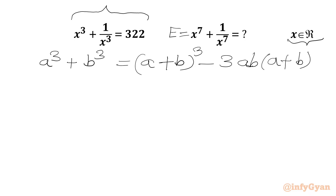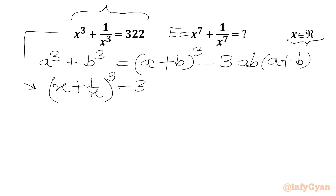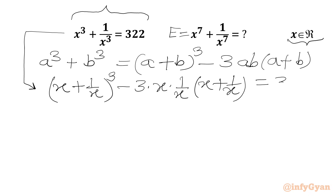Let's apply this formula to our LHS. We can write (x + 1/x)³ − 3 · x · (1/x) · (x + 1/x) = 322. Now let's assume x + 1/x = a.